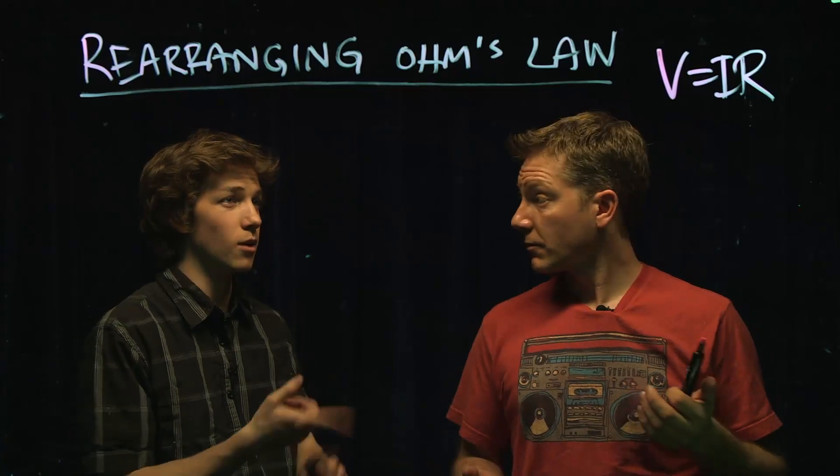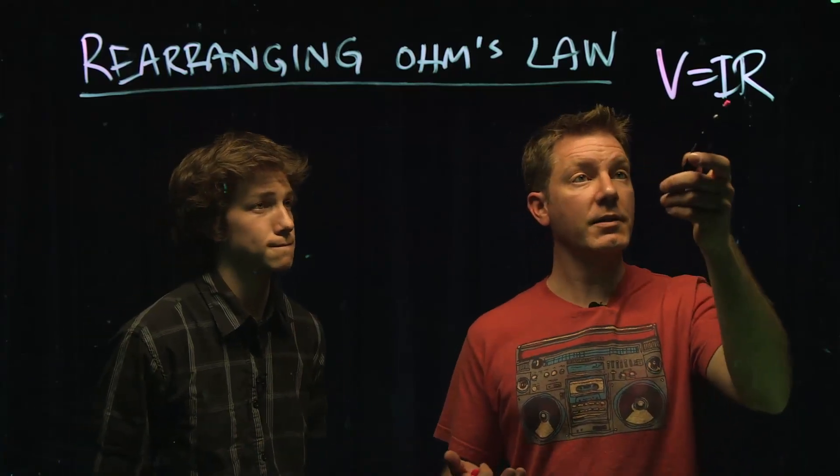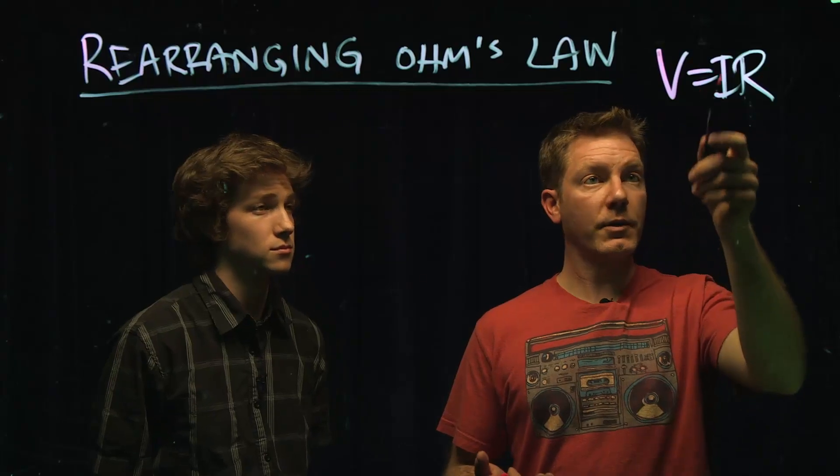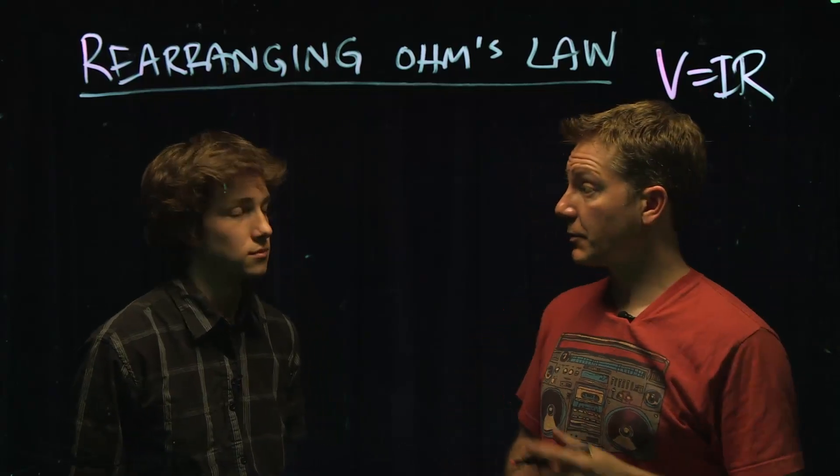Right. So it's just a matter of multiplying the two together. So V equals I times R. So then you take I, whatever that is, times R. That's easy. Awesome.